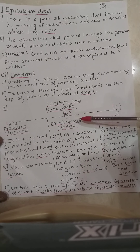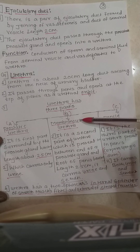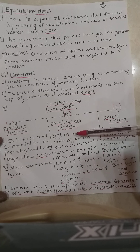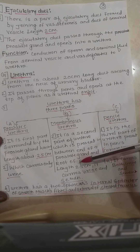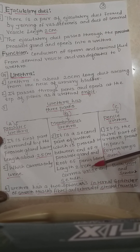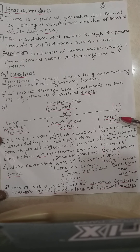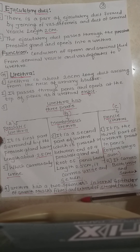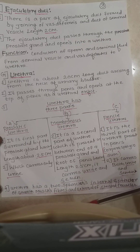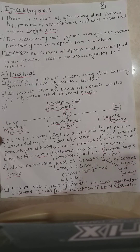The second part is the membranous urethra, present between the end of the prostatic gland and the root of the penis, about 2.5 cm long, and carries both urine and semen. The third part is the penile urethra, present in the penis within the corpus spongiosum, and also carries both urine and semen. The urethra has two sphincters: the internal sphincter made of smooth muscle, and the external sphincter made of striated muscle.